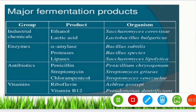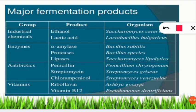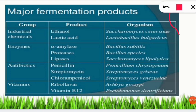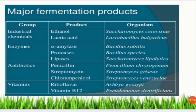Major fermentation products include industrial chemicals. Ethanol is produced from Saccharomyces cerevisiae; lactic acid is produced from Lactobacillus — for example, Lactobacillus bulgaricus. Lactic acid is also produced in our body during stressful exercise, which causes cramps.